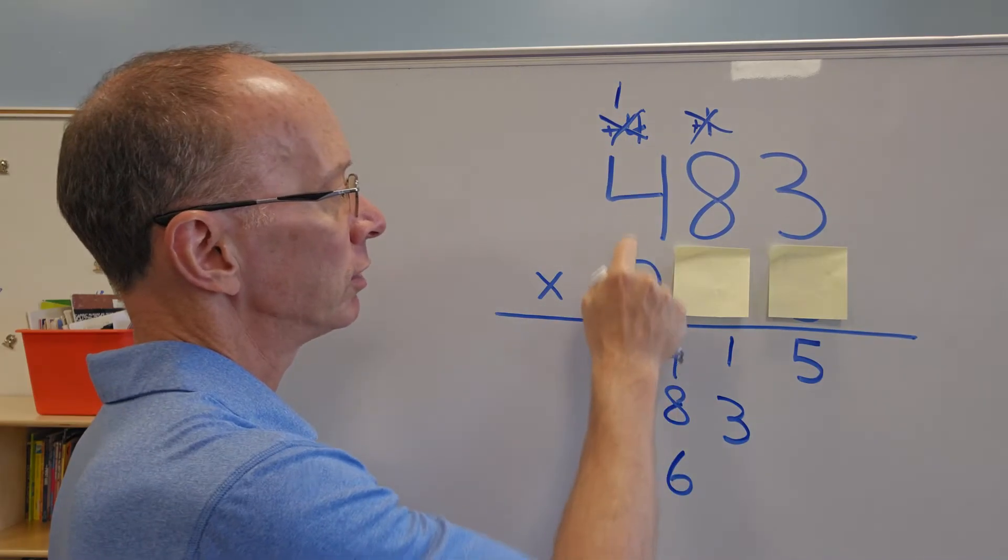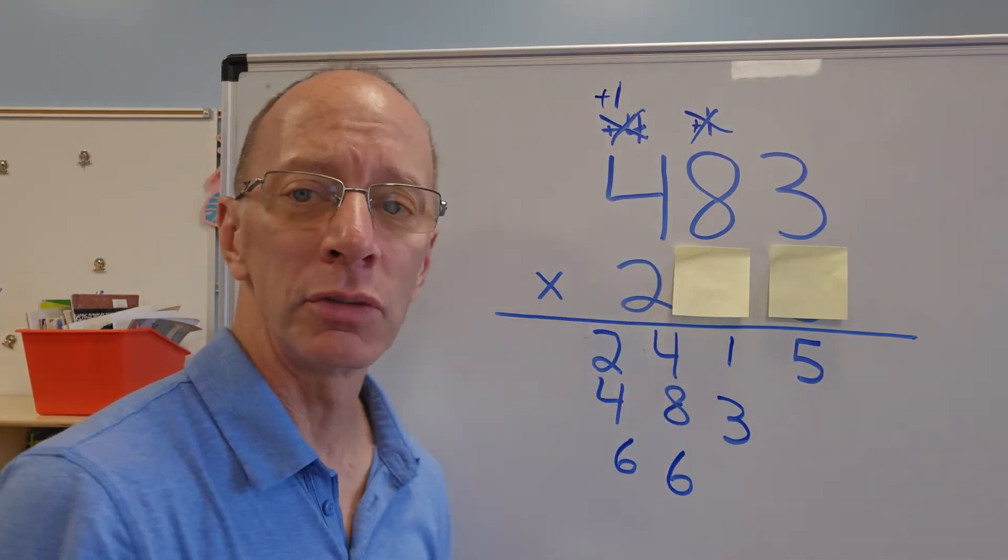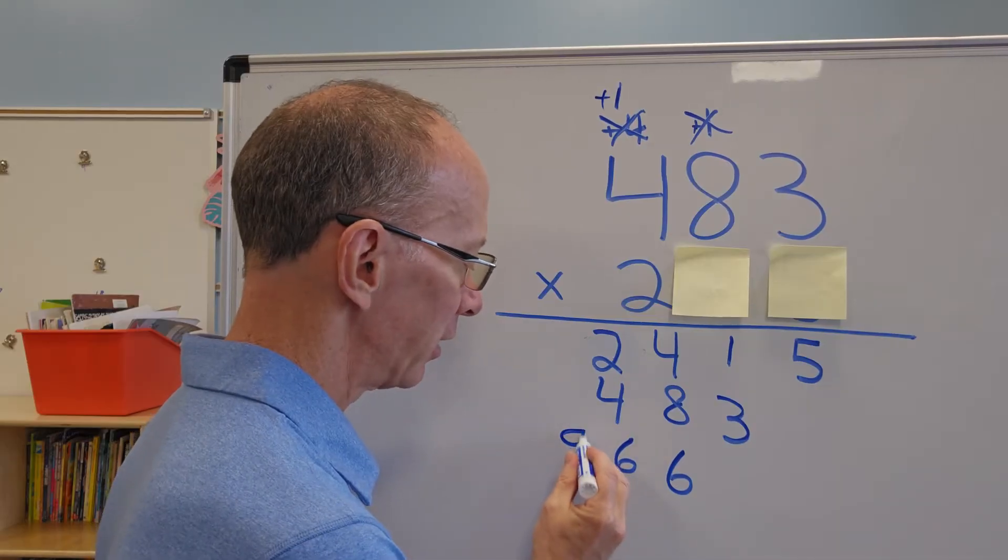So I did two times three is six. Two times eight is 16. I carried the one. And now two times four is eight plus that one right up here, which would be nine. So I put the nine right here.